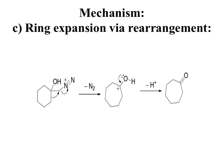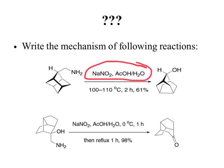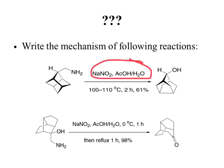Here I have given two applications — you should try out the mechanism for these two rearrangements. You might notice that on the arrow I have written NaNO₂, acetic acid, and water. HNO₂ (nitrous acid) is generally generated in situ and cannot be isolated, so for its formation we use NaNO₂ (sodium nitrite) and an acid — in this case acetic acid. While writing the mechanism, you do not have to write this; you can directly write HNO₂ and proceed with the mechanism.